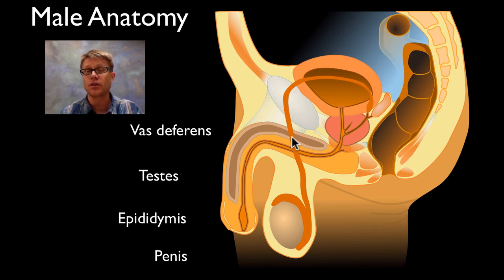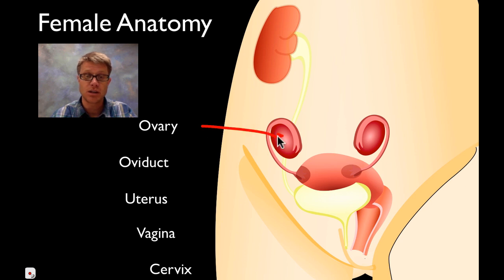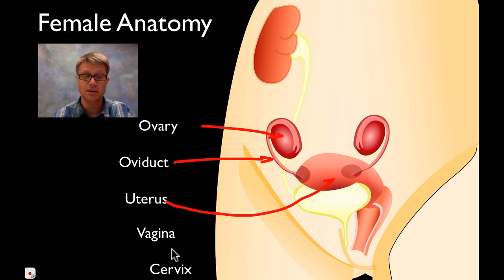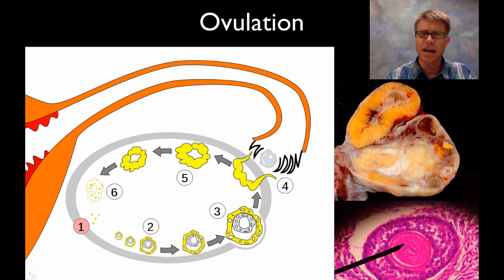Males constantly make sperm throughout their lives. Females, however, start with just a few hundred thousand eggs when they're born. Looking at female anatomy: these are the ovaries. When an egg is released it goes into the oviduct, sometimes referred to as the fallopian tube. We have the uterus — that big area — where the fertilized egg will implant or not. Then we have the vagina, for reception of semen, and the cervix, which will dilate when a baby is eventually born.